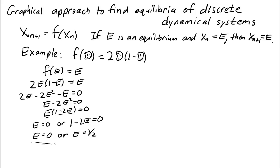So this is the analytic method to find the equilibria. Let's now try to do this graphically. To do this graphically, we're going to make a plot of x_{n+1} versus x_n.